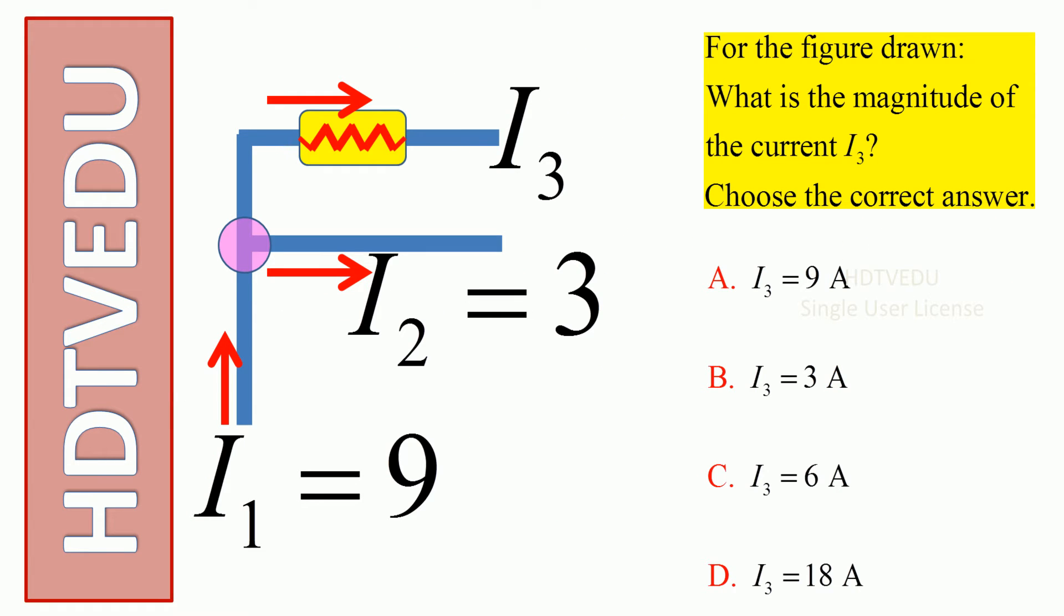For the figure drawn, what is the magnitude of the current I3? From the figure we see that current I1 is 9 amperes, current I2 is 3 amperes, and we don't know what current I3 is. I1 is headed to the junction, current I2 leaves the junction, and current I3 also leaves the junction.